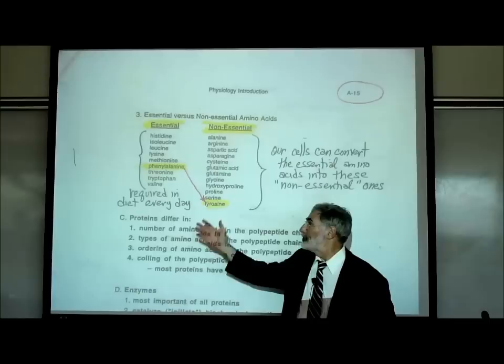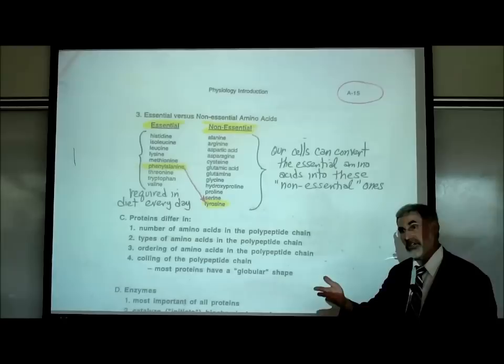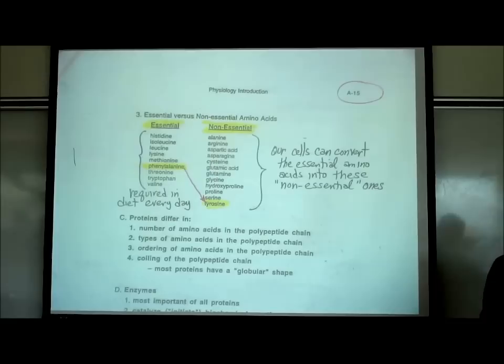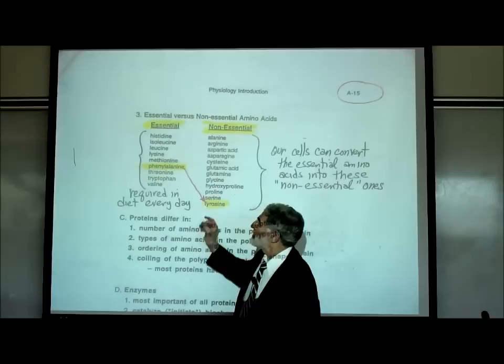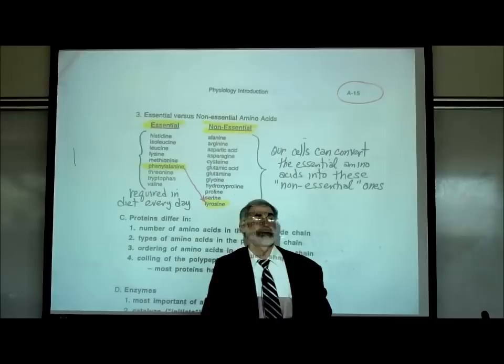If we eat lots of different kinds of foods, we'll get all 20 different types of amino acids. But any single food may not have high amounts of all 20, because not all proteins contain all 20 types. Of the 20 amino acids, approximately half — about 10 — are regarded as non-essential.